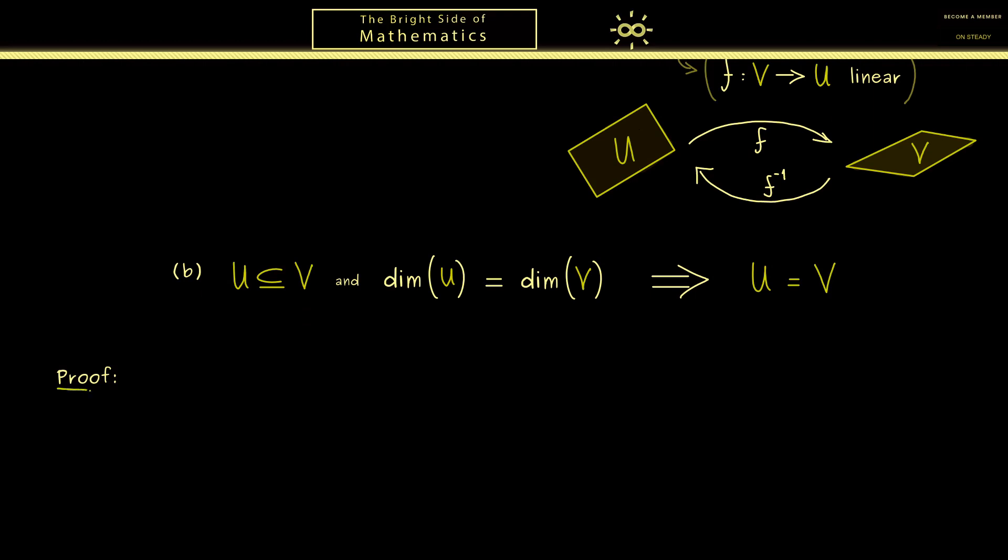So let's start writing down the proof for part A. More precisely we will start with the direction with the implication from left to right. Hence what we put in, what we assume is that both subspaces have the same dimension. Hence when we now write down the basis B of U and the basis C of V then we know they have the same number of elements. So let's simply say the number of vectors here is given by the integer K.